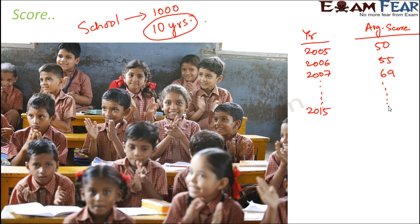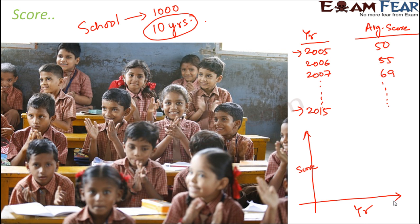This gives you a table of year and average score, with some 10 rows covering 2005 to 2015 — again a large amount of data. Instead of representing it as a table, if you draw a graph where the vertical axis represents score and the horizontal axis represents the year, you mark points corresponding to the score for each year. For 2005 the score is 50, next 55, then 69, then it might drop in 2008, increase again in 2009, and increase further in 2010. When you join these points, you get a line graph.